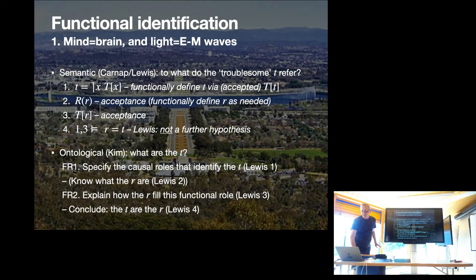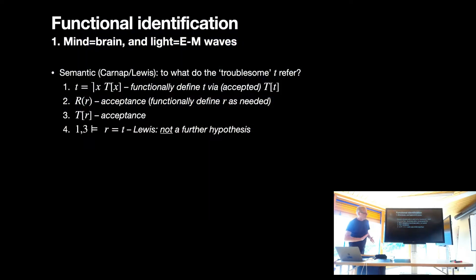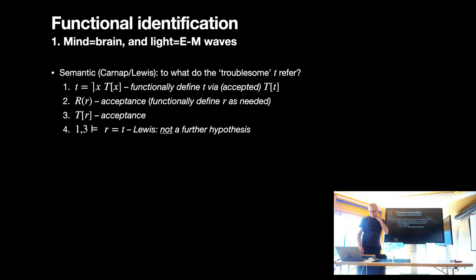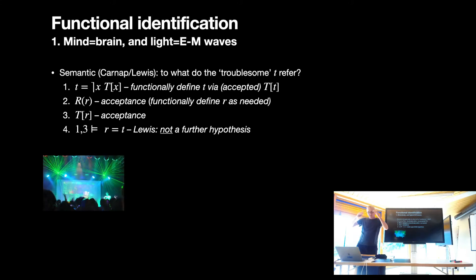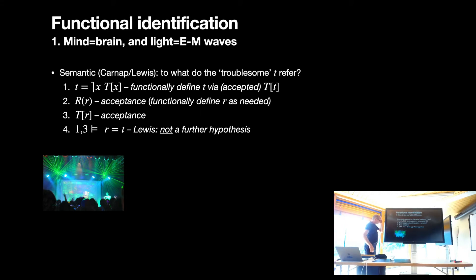Let's run through how that goes in the case of light. I'm interested in what light is, so first I'm going to functionally define what light is. The T here would be the theory of geometric optics plus some other well-established facts about light, including the constant speed. That tells us what light is — it's the thing that satisfies those theoretical postulates.